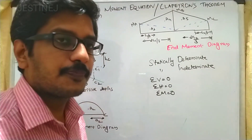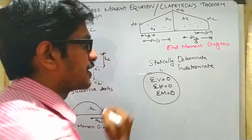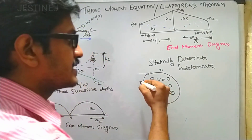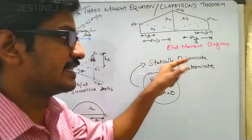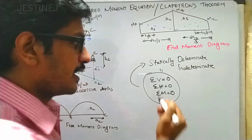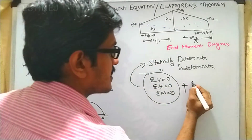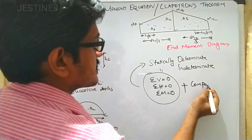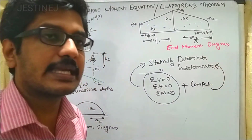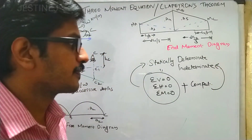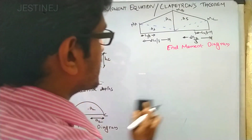If we can solve any problem using these three equilibrium equations, then such structures are called statically determinate structures. If, in addition to these three equations, you are also using some compatibility equations, then such structures are called statically indeterminate structures.